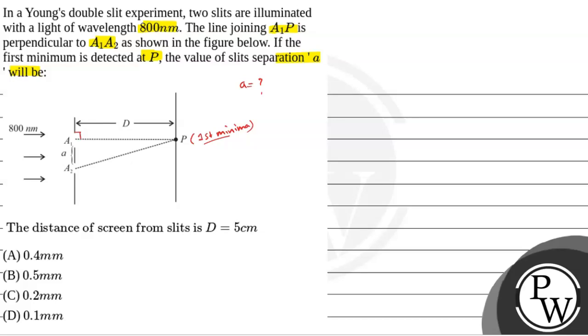Now, this question mein humara jo key concept hoga, that is condition for minimum in Young's double slit experiment. So humara minima ki condition kya hai?